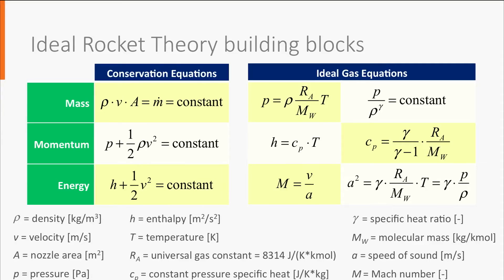A Mach number higher than 1 means that the flow is supersonic, while for a Mach number lower than 1 the flow is subsonic. All the equations that we will see in the following are obtained starting from one or more of these building blocks, combined together in different ways, exactly like Lego blocks can be combined in different ways to obtain many different shapes.